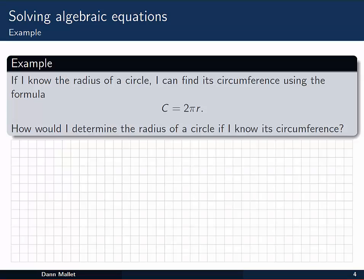As an example, if I know the radius of a circle, I can find its circumference, the distance around the edge, using the formula C equal to 2 pi r. But what about if I wanted to determine the radius given that I already knew the circumference, perhaps by measuring it as I walked around the circle? How would I figure that out?